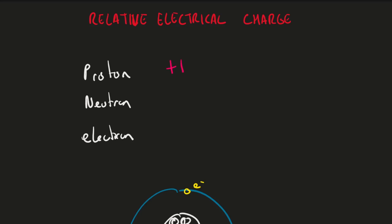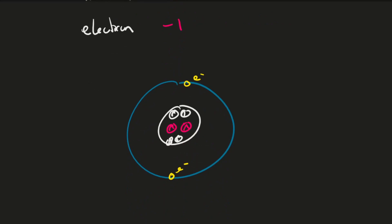If the proton has a charge of plus one, that means the electron has a charge of minus one. So the proton and electron have an equal and opposite charge, and the neutron has a charge of zero because it has no charge.